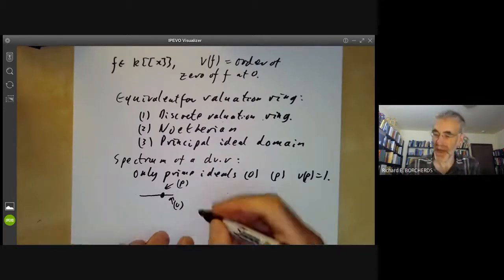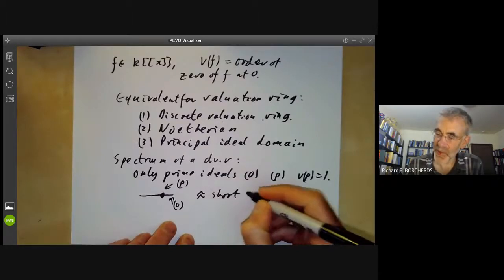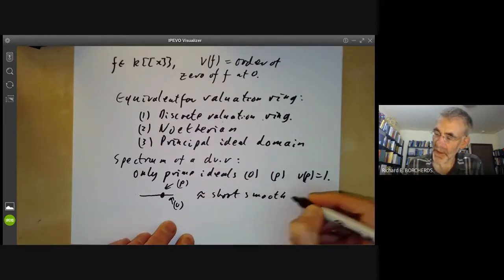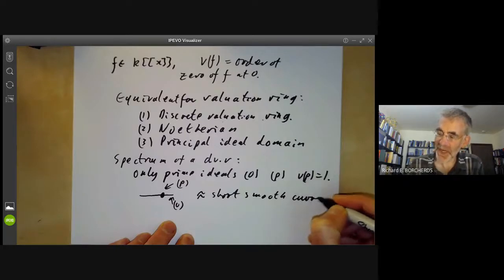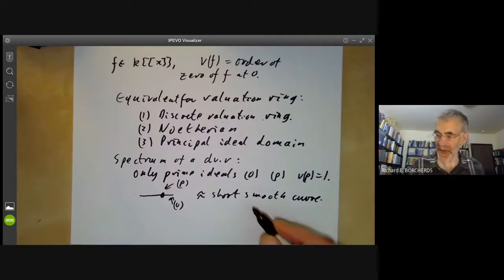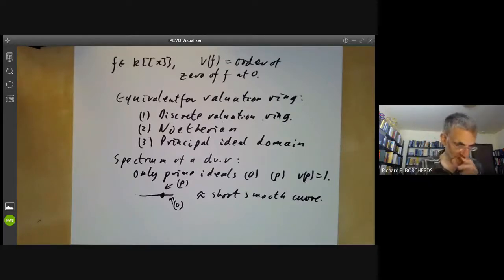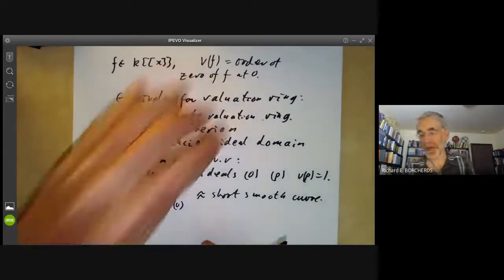And you should think of the spectrum as being somewhat analogous to a short, smooth curve, where we've taken it so short that we can only see one point on it. And valuation rings, to some extent, play the same role in algebraic geometry that short, smooth curves sometimes play in analysis. We'll see one or two examples of this fairly soon.